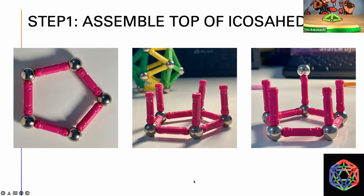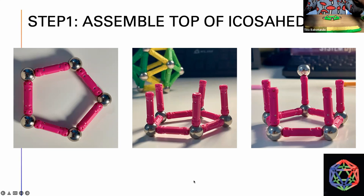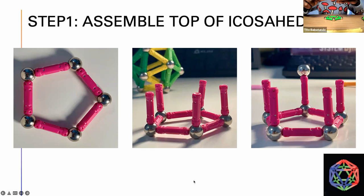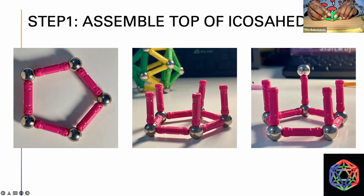We're going to do another one as well, because we need two tops for the icosahedron. We create the pentagon again — this is how the pentagon looks — and we attach five perpendicular sticks again, then place the other ball on top. We push it so it all sticks together, and this is the result.